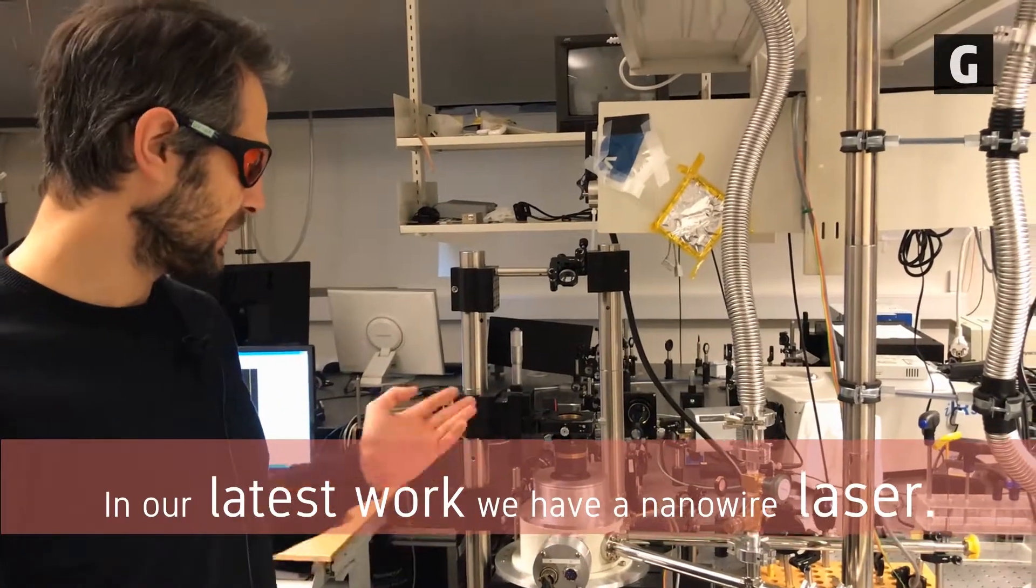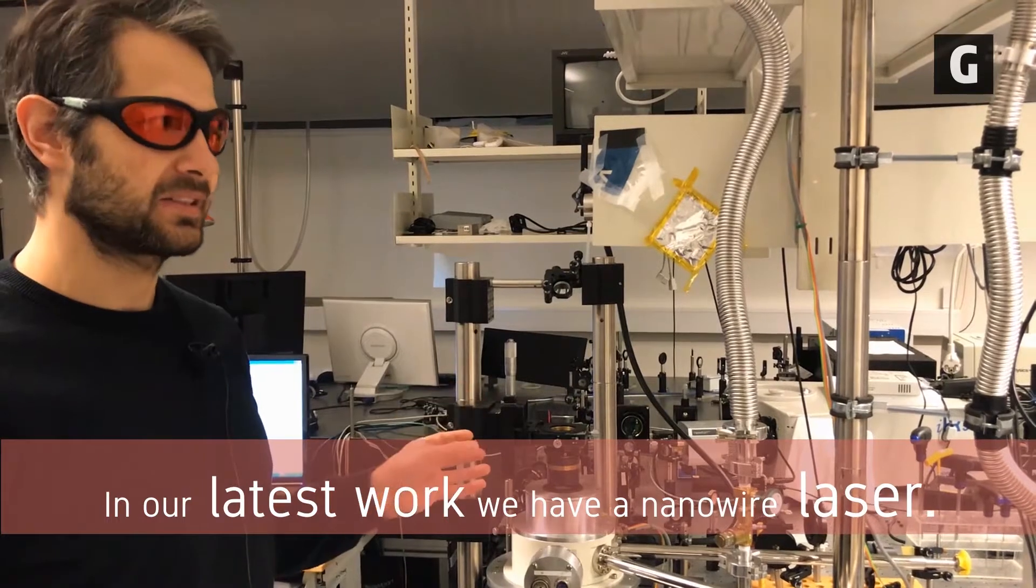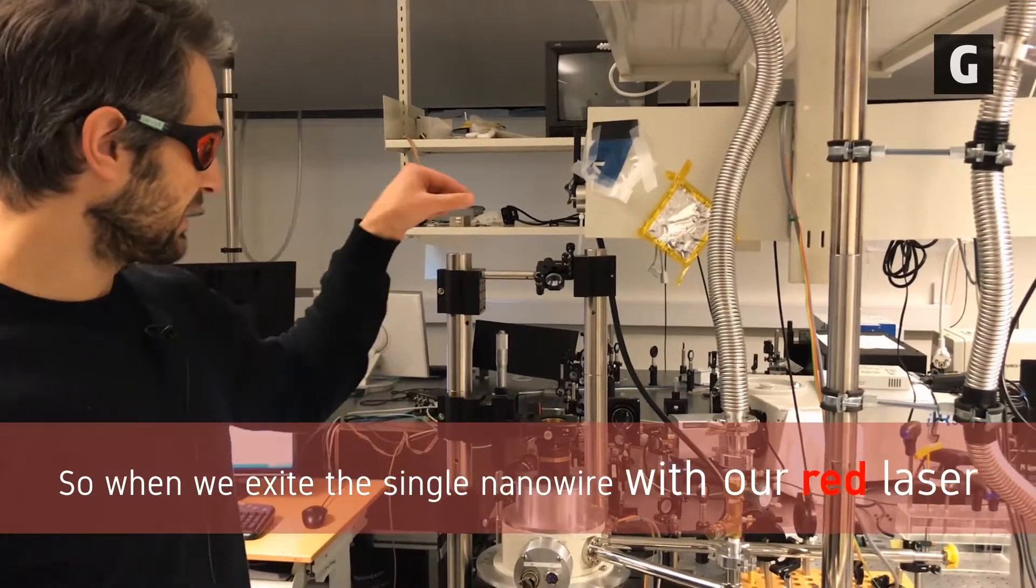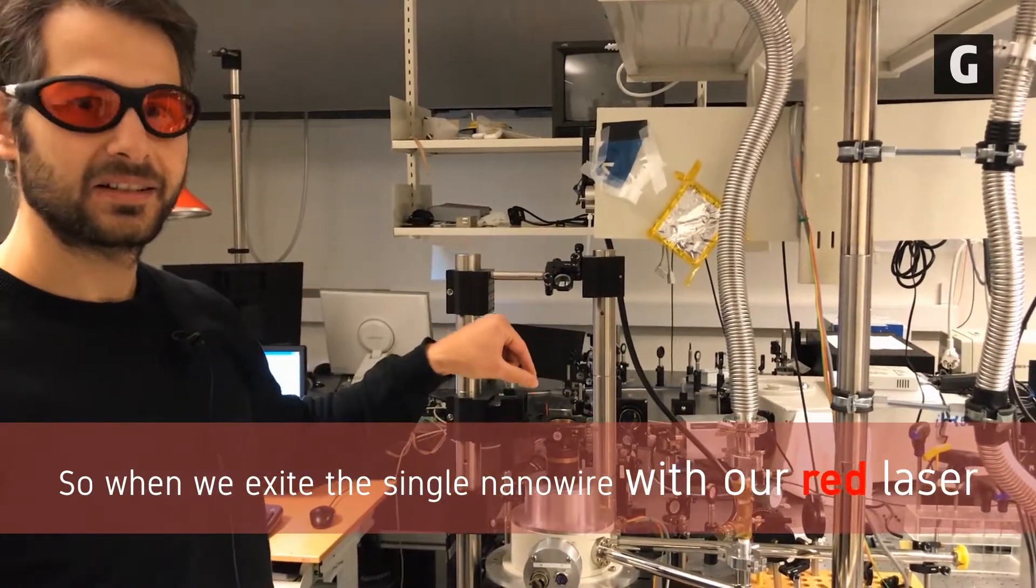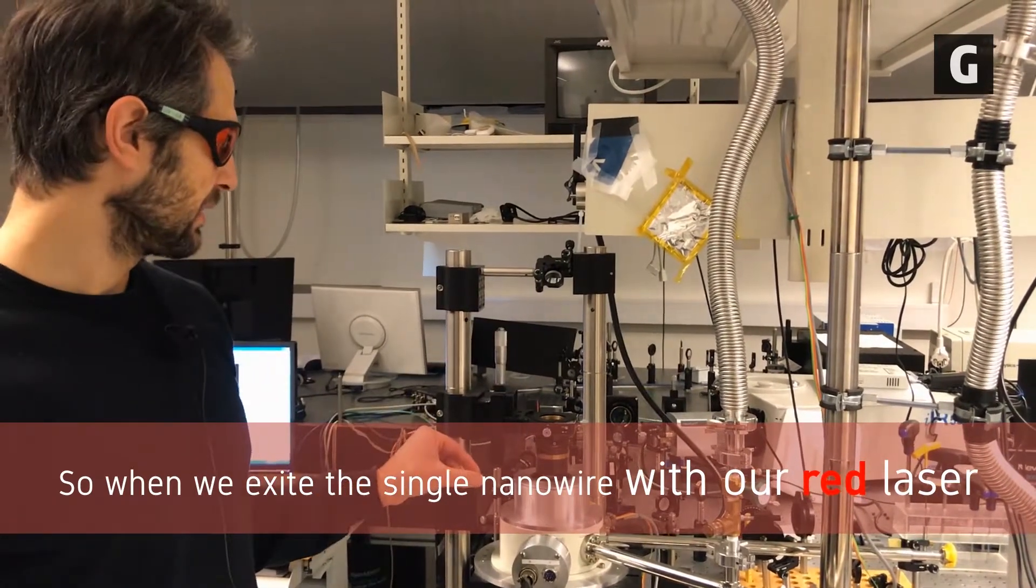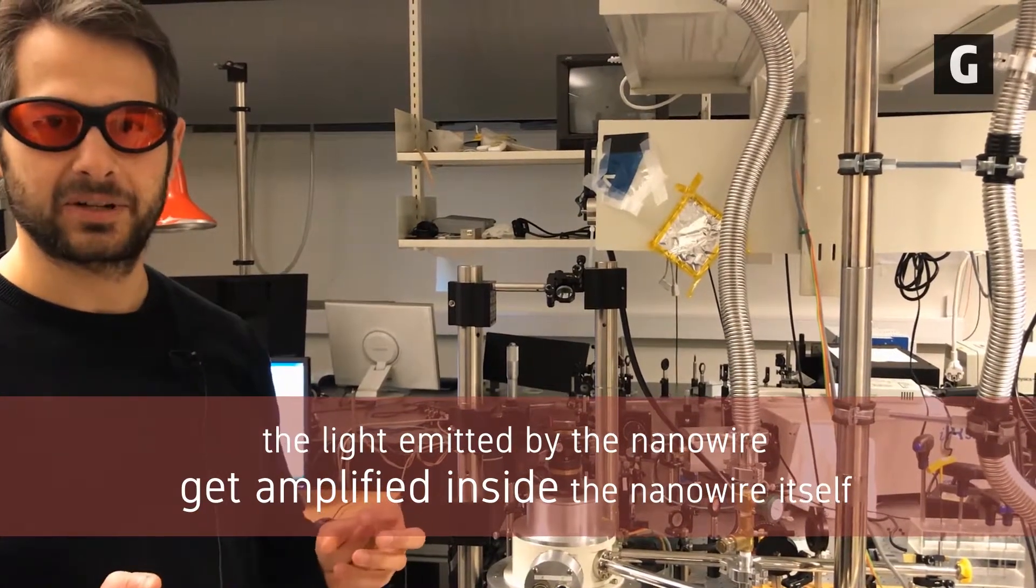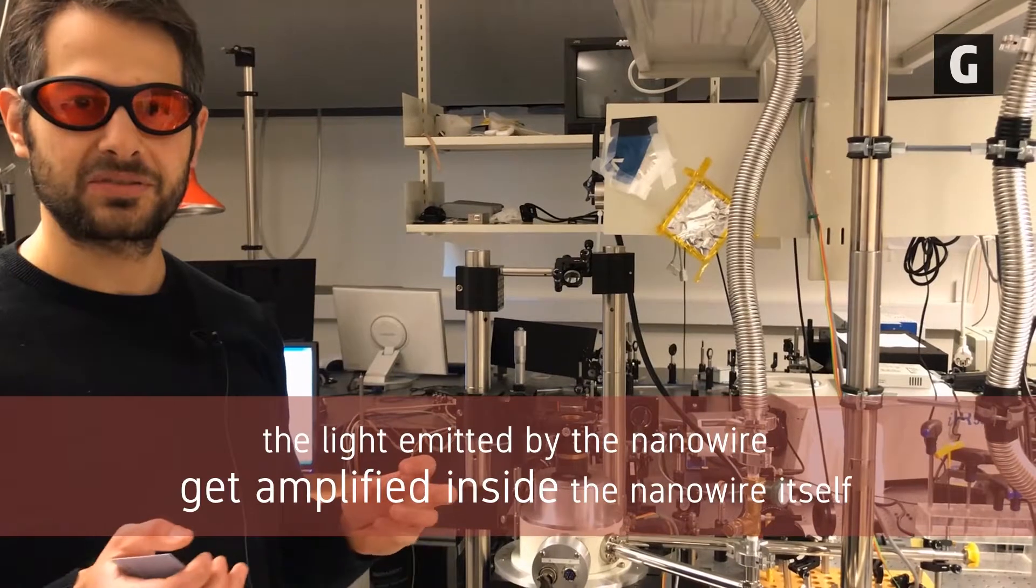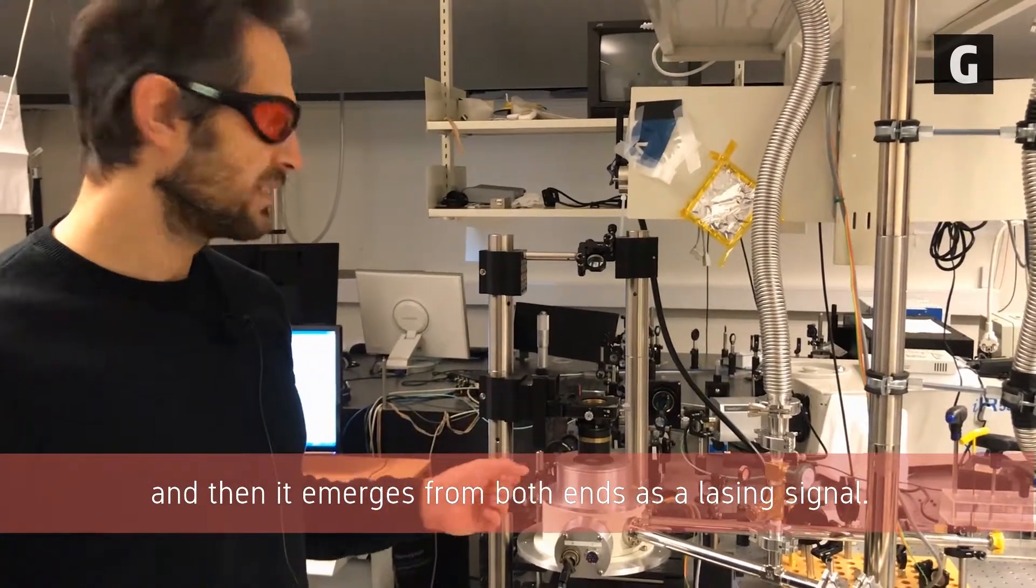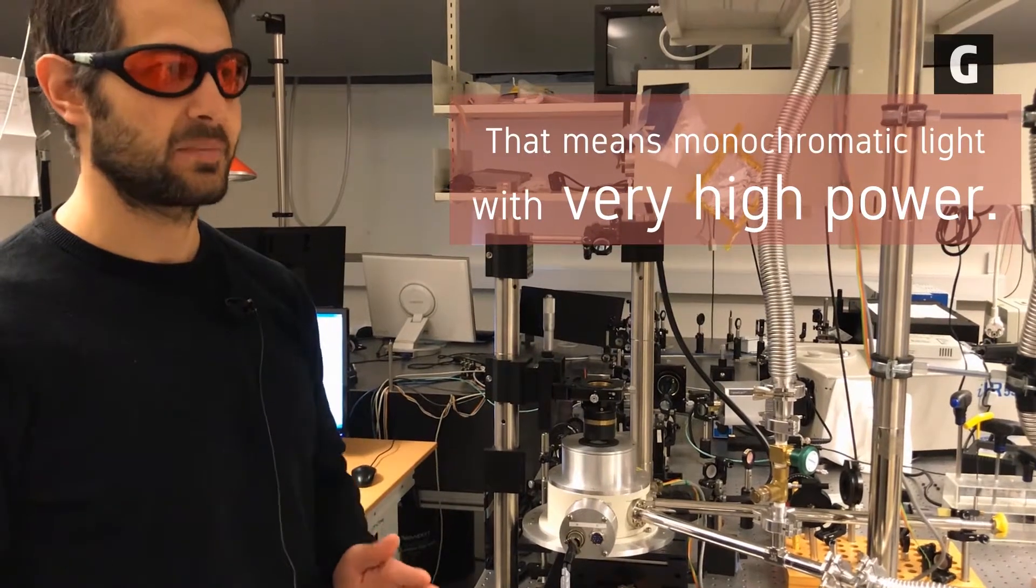And in our latest work, we have a nanowire laser. So, when we excite a single nanowire with our red laser, the light emitted by the nanowire gets amplified inside the nanowire itself and then emerges from both its ends as a lasing signal. That is to say monochromatic light of very high power.